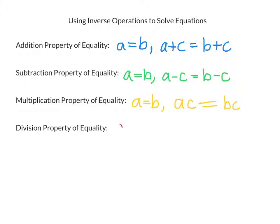And the division property of equality says that if one quantity equals another, then dividing both sides by the same quantity will keep it balanced or equal. With division, we do have to specify that C cannot equal 0. We always have to specify that with division, that we can't divide by 0. That's undefined.